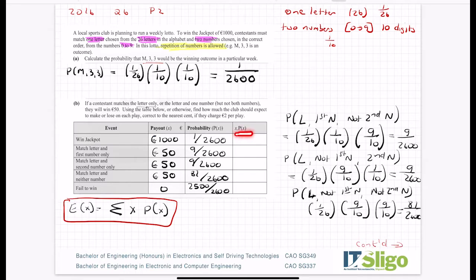X times probability of X means I multiply this by this. So let's do that. I'm not even going to simplify the fractions and I'll just write it in blue so you can see it. A thousand by that is 1000 over 2600. 9 by 50 is 450 over 2600. 9 by 50 is 450 over 2600. 81 by 50... and then zero.